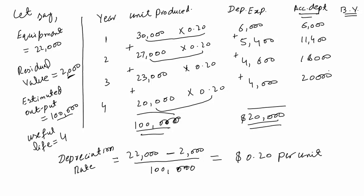The book value in year 1 is equal to cost of the asset minus accumulated depreciation: 22,000 minus 6,000 equals 16,000. In year 2: 22,000 minus 11,400 equals 10,600. In year 4: 22,000 minus 20,000 equals 2,000. The book value in the last year must be equal to the residual value. If it is not, there must be something wrong.